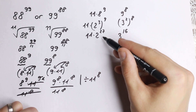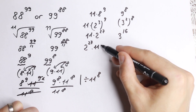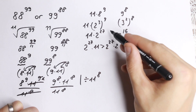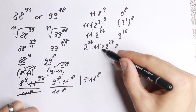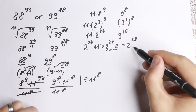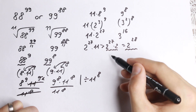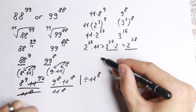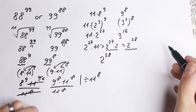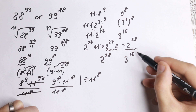Now, how can we compare 3 to the 16th and 2 to the 27th? Here's a really good trick. Since 11 is greater than 2, we know that 2 to the 27th times 11 is greater than 2 to the 27th times 2, which equals 2 to the 28th power. So our left hand side, 11 times 2 to the 27th, is greater than 2 to the 28th. We can now work with 2 to the 28th as a lower bound for the left side, and leave the right side as 3 to the 16th.